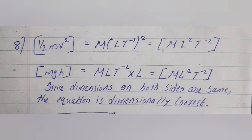m¹ L² T⁻² and mgh is equal to m¹ L¹ T⁻² × L = m¹ L² T⁻². Since dimensions on both sides are the same, the equation is dimensionally correct.